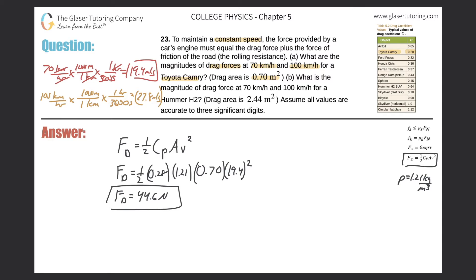I'm just going to put a little parenthesis over here with 27.8, and that's going to be squared. So now when I calculate my new drag force, everything's the same: 0.5 times 0.28 times 1.21 times 0.7 times 27.8 squared: 91.6 newtons. Okay great, that takes care of letter A.